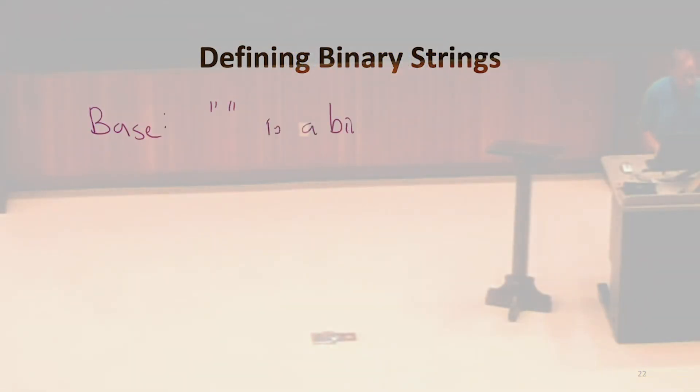And there are lots of different ways we could write it. It's hard to see empty strings because they don't look like anything. We can write this as lambda or epsilon. They're different symbols people like to use. But it's an empty string. It's a string with no bits in it. So that's our base case.